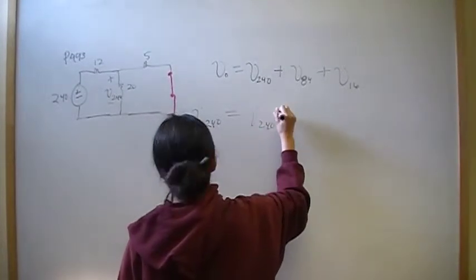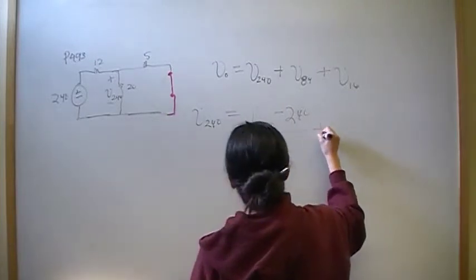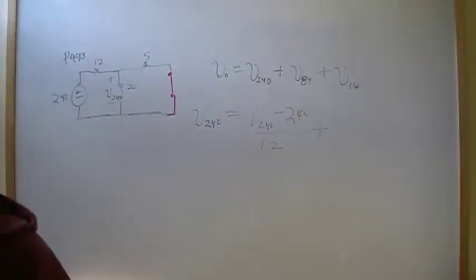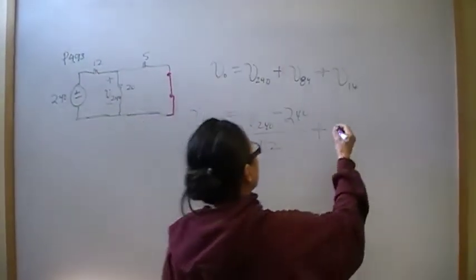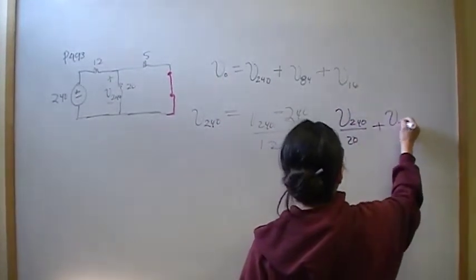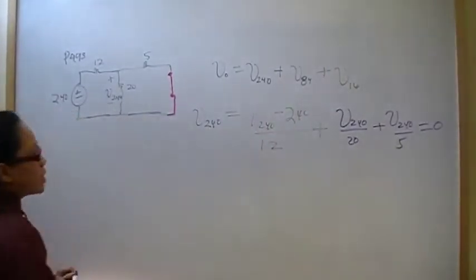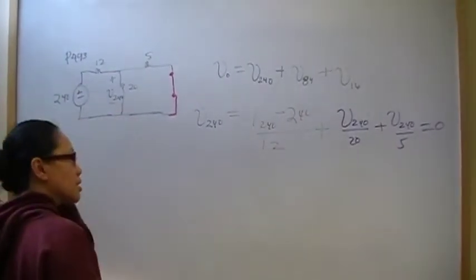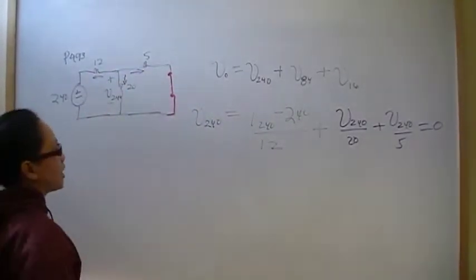So the way I did this was I did KCL at V240. If you want to do another technique such as voltage division, that's fine. I just find KCL and KVL to be more foolproof for me. So V240, so that is going to be V240 minus 240 over 12 plus V240 over 20 plus V240 over 5. That's all equal to zero.